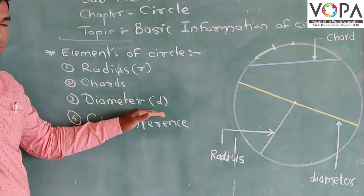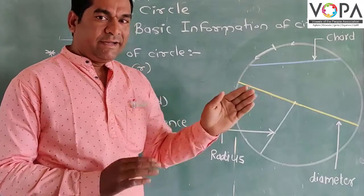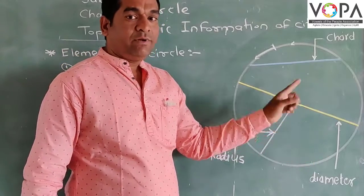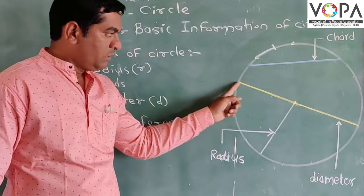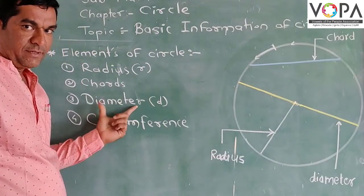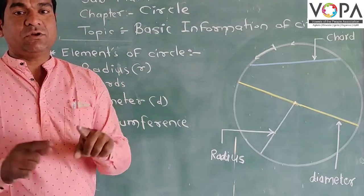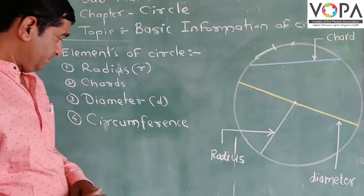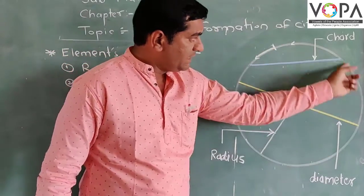The diameter is the biggest chord of a circle. It is also a chord, but the difference is that it passes through the centre of the circle. That is why it is called the diameter — it is the biggest chord of the circle.